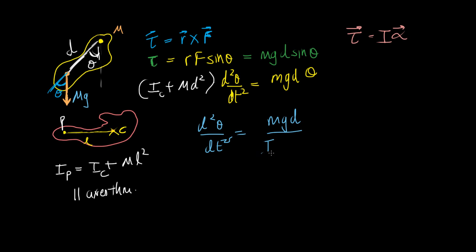mgd divided by I about the center of mass plus md squared, the whole thing times theta.